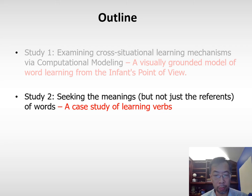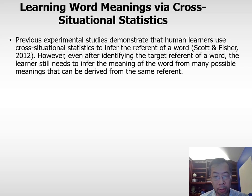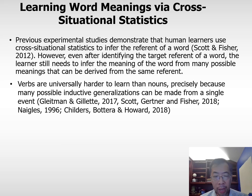Now I'll move from modeling work to experimental study. In this experimental study, we aim to understand how learners infer the meaning — not just the reference — of words. Previous studies demonstrate that human learners use cross-situational statistics to infer the reference of words. However, even after identifying the target referent, learners still need to infer the meaning of the word from many possible meanings derivable from the same referent.